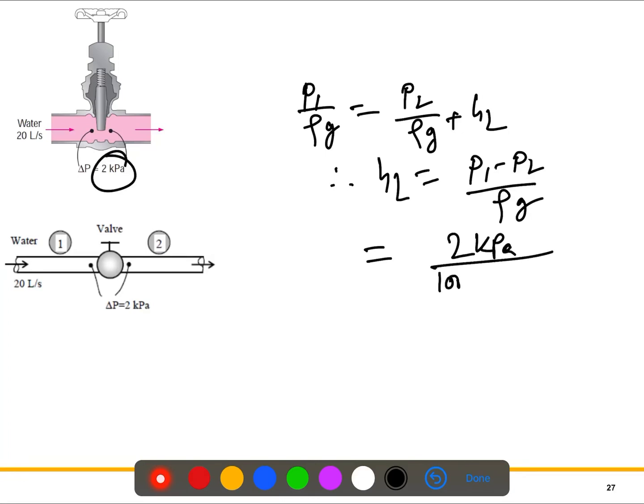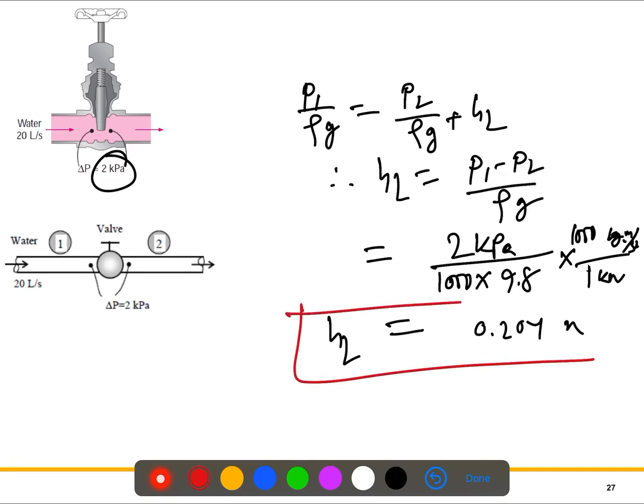So 2 kPa, ρ is 1000, gravity is 9.8. Convert it into kilonewton, which is 1000 kg·m/s². You already know it. So if we solve this, the hL will be 0.204 meters. So that's the head loss, the irreversible head loss for this problem.